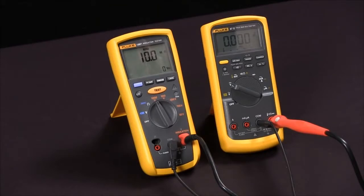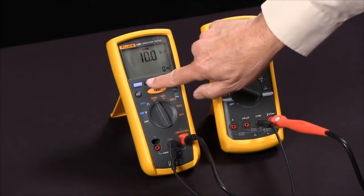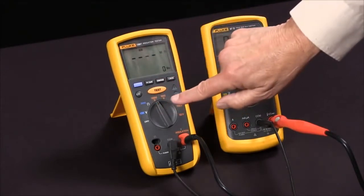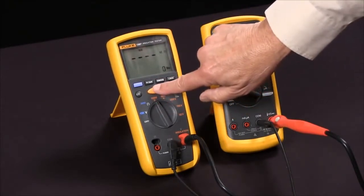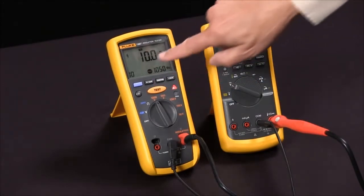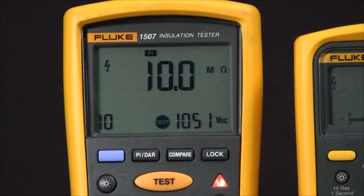Polarization index is done the same way. I select polarization index (PI) and 1,000 volts, then push the test button and it begins a 10 minute test. You see 10 minutes and that will count down, and at the end result it will show the ratio.